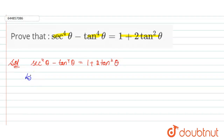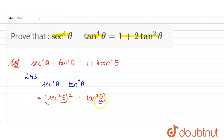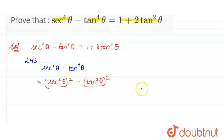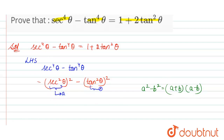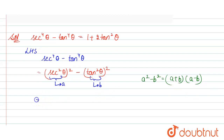Now let's come to the solution. The given expression is sec⁴θ minus tan⁴θ equals 1 plus 2 tan²θ. To solve this, take the left hand side: sec⁴θ minus tan⁴θ. We can write it as (sec²θ)² minus (tan²θ)². So we use the identity a² minus b² equals (a+b)(a−b), where a is sec²θ and b is tan²θ. We can write it as (sec²θ + tan²θ)(sec²θ − tan²θ).